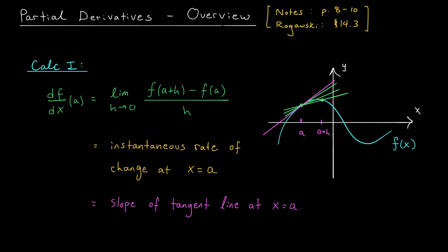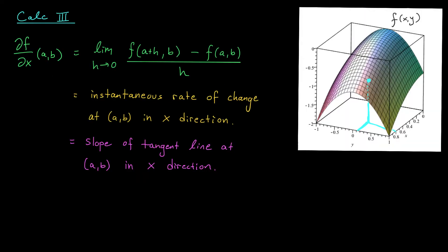Our goal for today is to extend this notion of a derivative to functions of multiple variables. Suppose that we have some multivariable function z equals f of xy, which we've graphed over here, and we want to measure the rate of change of our function as we move away from this point, which I'll call (a, b). Back in Calc 1, we could only move left or right, so we only needed one slope to define our rate of change. Now we have infinitely many directions in which we can move — so shouldn't we have infinitely many different rates of change?